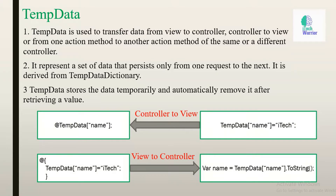TempData is derived from TempDataDictionary. Third point: TempData stores the data temporarily and automatically removes it after retrieving a value. As you can see in the diagram, the first diagram shows data transfer from controller to view, and the second shows data transfer from view to controller.